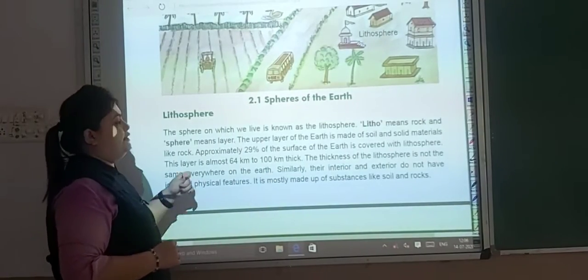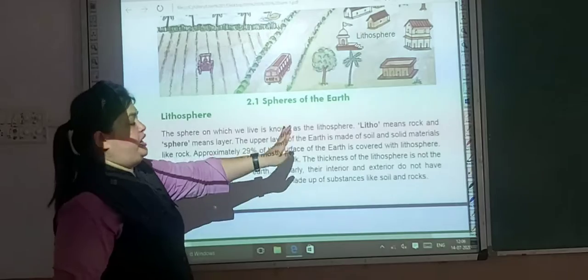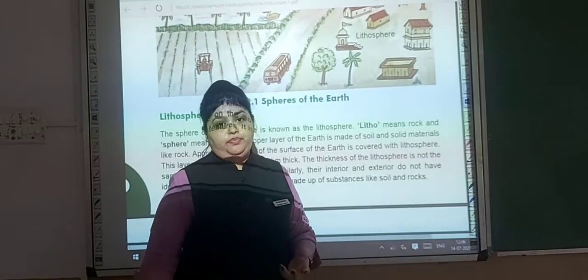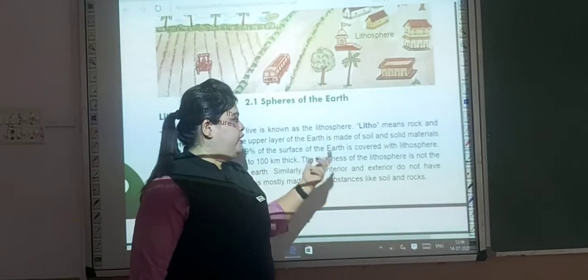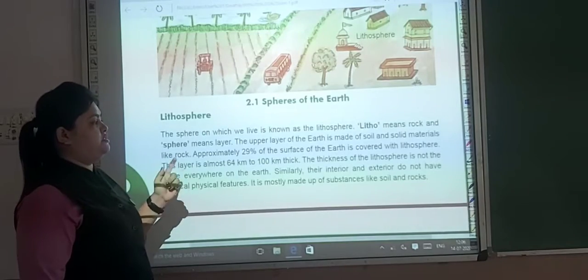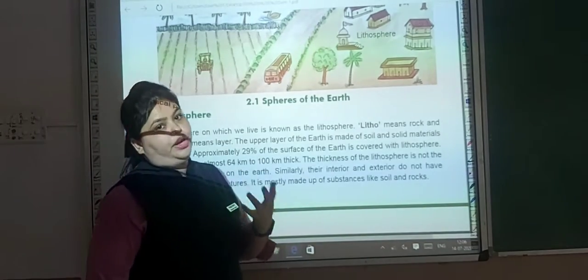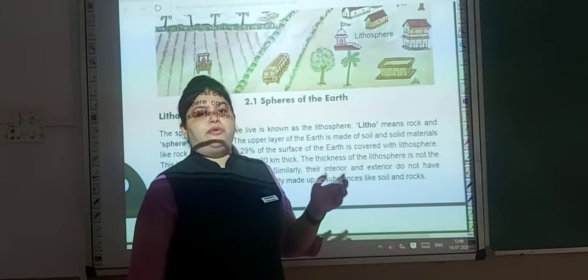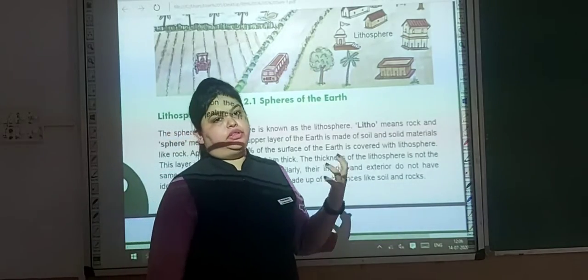The upper layer of the earth is made of soil and solid materials like rock. Approximately 29% of the surface of the earth is covered with the lithosphere. We know that 71% is covered with water, and apart from that, 29% is covered with the lithosphere.